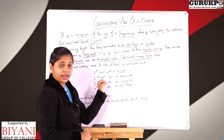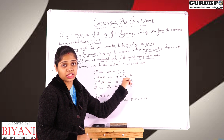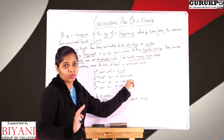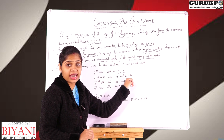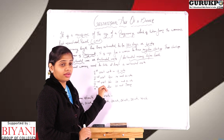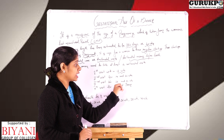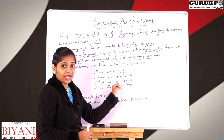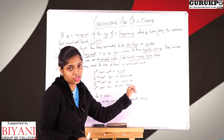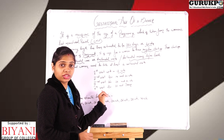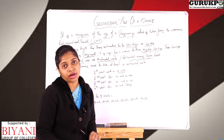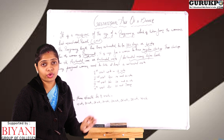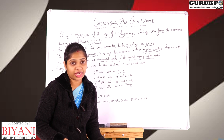The second checkup should be between 14 and 26 weeks. The third visit should be between 28 and 34 weeks for antenatal checkups. The fourth visit should be between 36 weeks and term. These are the minimum 4 visits the mother should take during pregnancy.